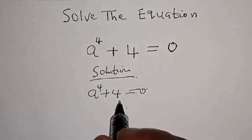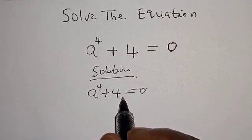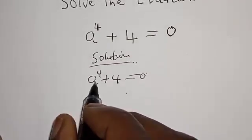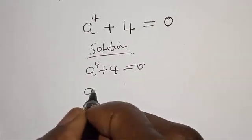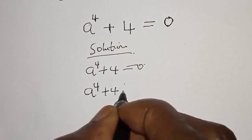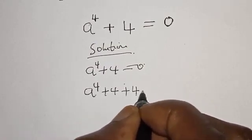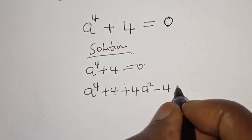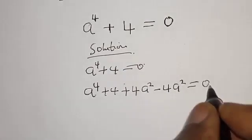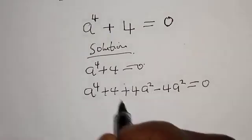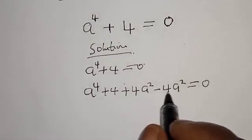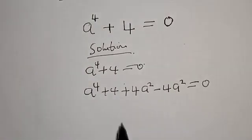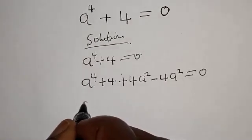We are going to manipulate this equation such that it will be easier to work with. Let's add and subtract 4a squared. Then we have a raised to the power 4 plus 4 plus 4a squared minus 4a squared equal to 0. This does not formally change the equation because minus 4a squared plus 4a squared cancel out.